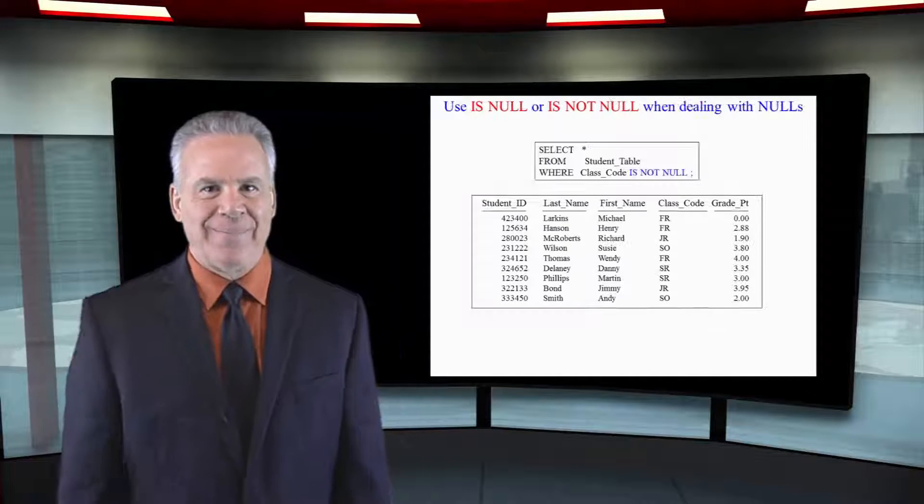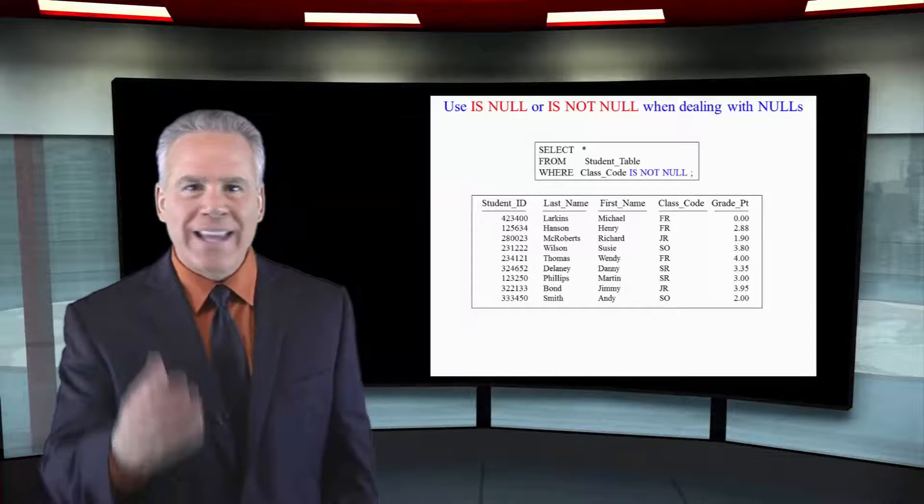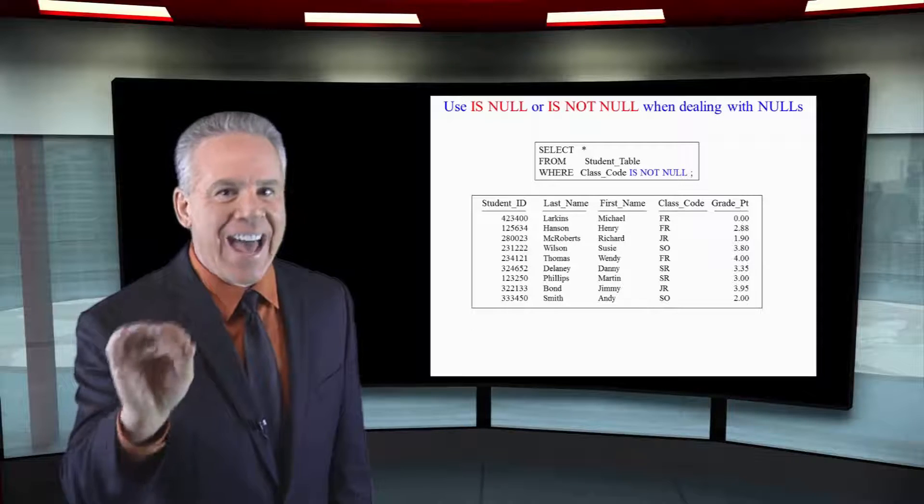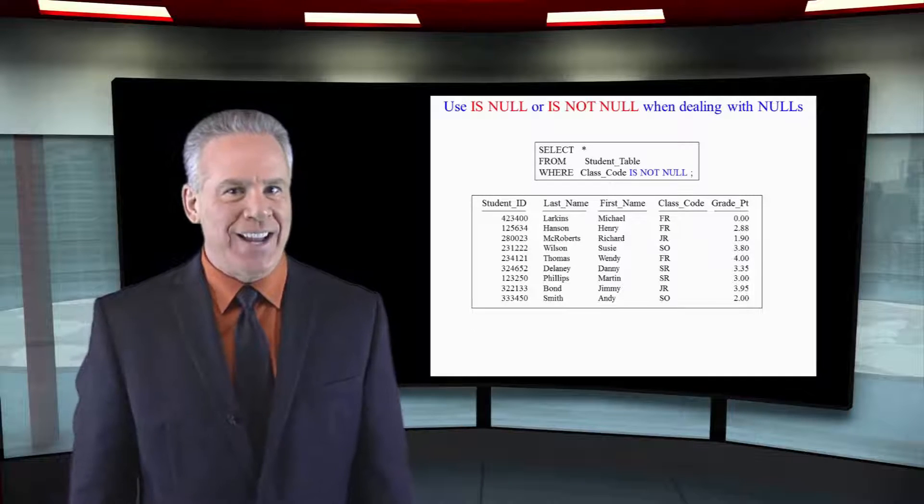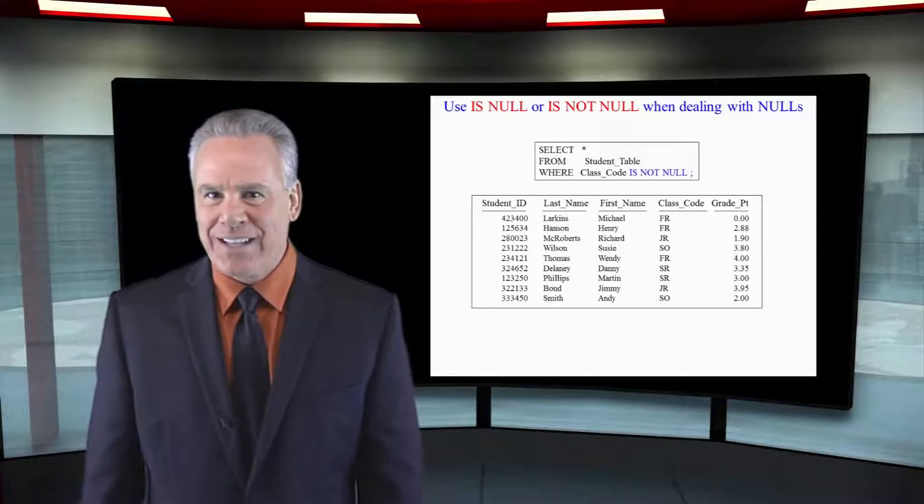This is how we fix that last query. We want to find all the rows where the class code is not null. If you use IS NOT NULL, notice that all the rows came back except for Stanley Johnson, because his class code was null.